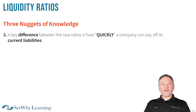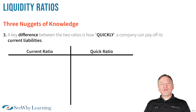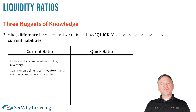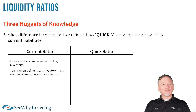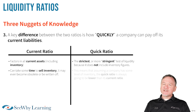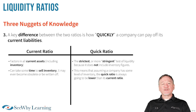Nugget number three: a key difference between the two ratios is how quickly a company can pay off its current liabilities. The current ratio factors in all current assets, including inventory. But as you can imagine, it can take some time to sell inventory, and sometimes inventory can sit on the shelf for a while, may become obsolete, and eventually be written off. On the other hand, the quick ratio is the strictest — the more stringent test of liquidity — because it does not include inventory figures. This means that assuming a company has some level of inventory, the quick ratio will always be lower than the current ratio.